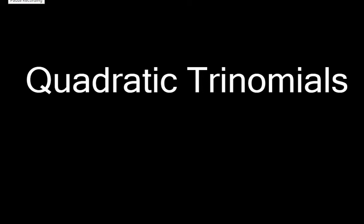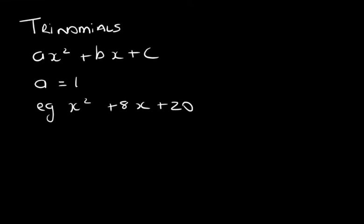Today we are going to be discussing quadratic trinomials. Now you should remember that we did trinomials in grade 9, and if you look at the form ax² + bx + c, the value of a in grade 9 is 1. In other words, we will have 1x² + 8x + 20, but we know that the 1 is invisible. So let's look at how we would factorize this particular trinomial.